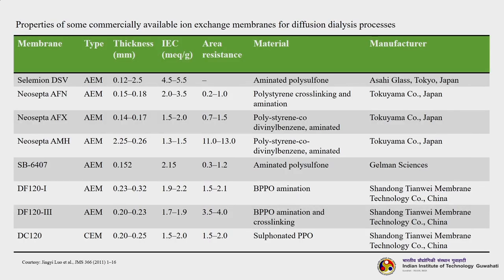A table shows the properties of commercially available ion exchange membranes for diffusion dialysis, listing membrane trade names, types (mostly anion exchange with one cation exchange), thickness, ion exchange capacity, area resistance, material, and manufacturer name. CEMs for diffusion dialysis are relatively seldom reported compared with AEMs. Diffusion dialysis tests in systems of NaOH+NaCl or NaOH+Na₂SO₄ have been investigated using heterogeneous hollow fibre membranes with sulfonic acid groups, as well as hydrophilic and hydrophobic fluorine membranes with perfluorinated sulfonic acid groups.